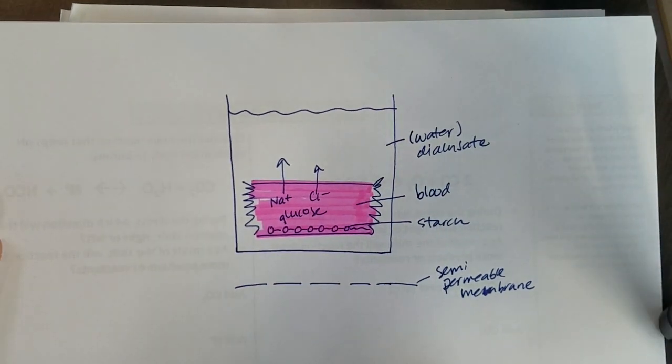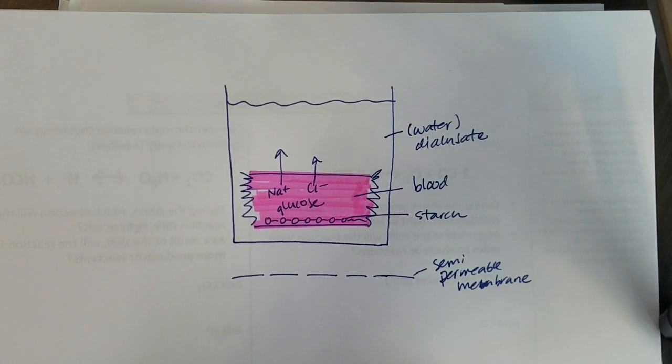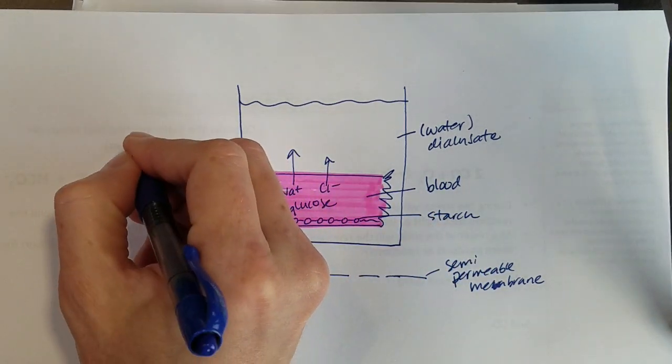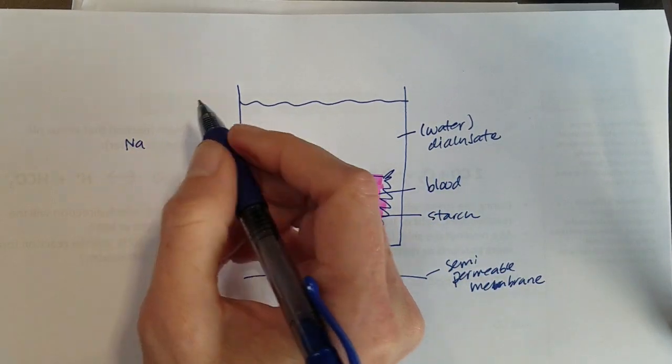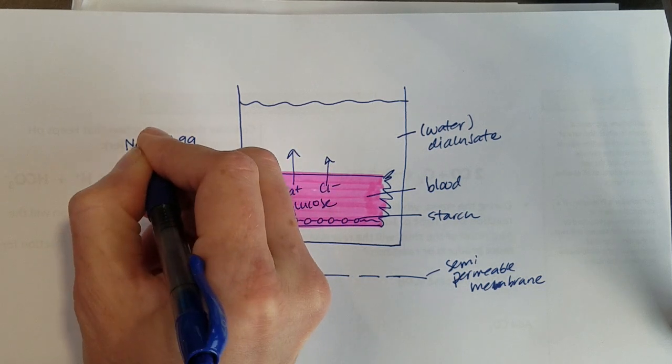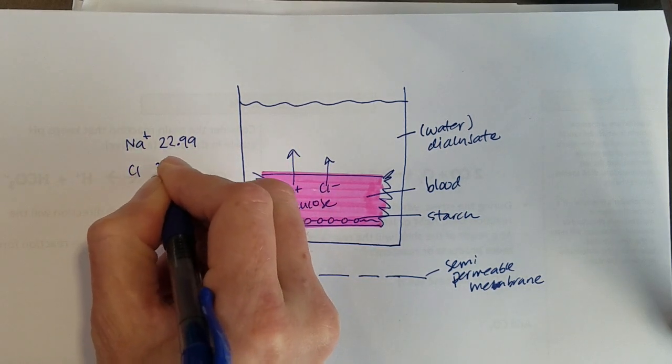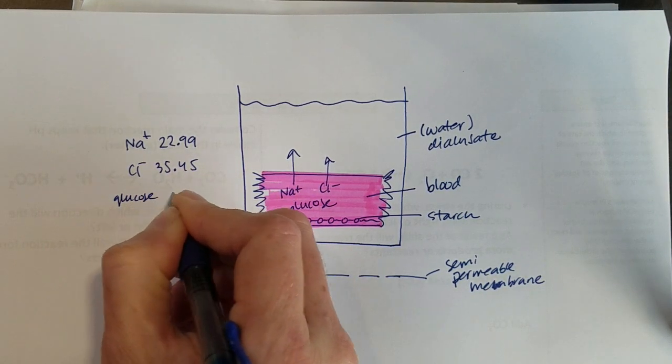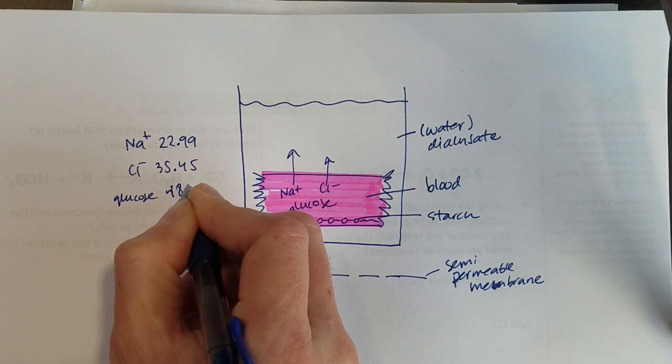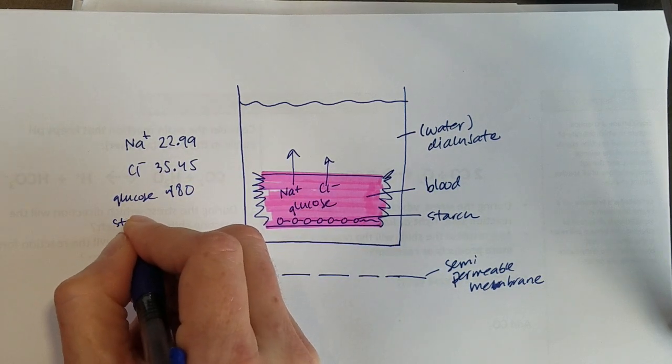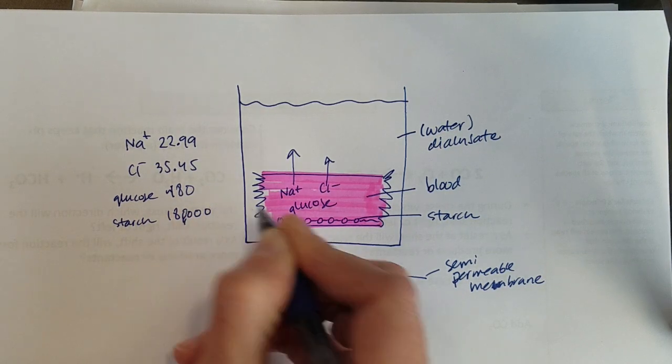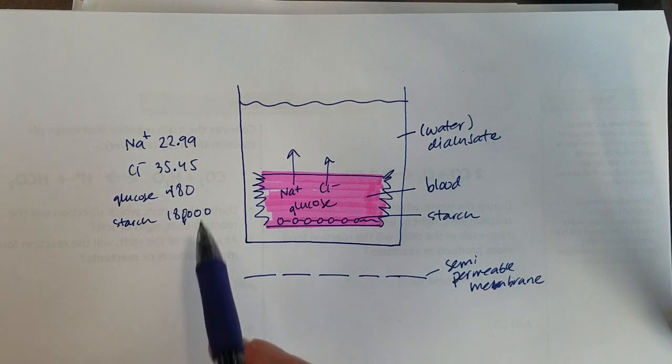One way to quantify how big substances are is looking at their molar masses. Sodium has a mass of 22.99, chloride 35.45 grams per mole. Glucose has a molar mass of around 180, and starch is about a thousand glucoses stuck together, so that would be 180,000 in terms of size.